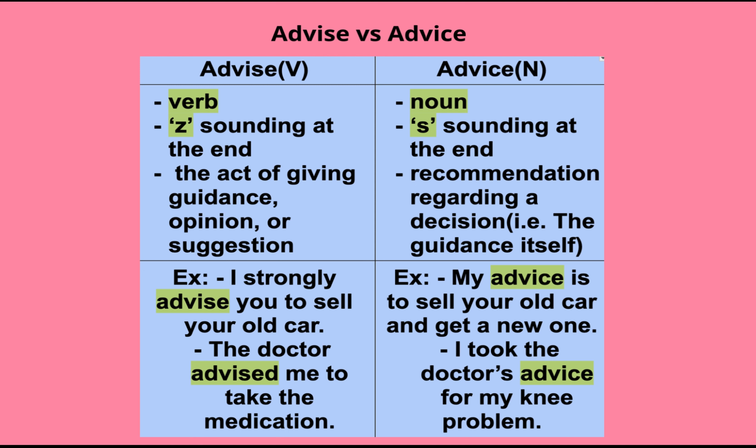The second one is advice. As we have talked, this is a noun, and it has an S sounding at the end. It is nothing but the recommendation regarding a decision — that is, the guidance itself. As it is a noun, we can use it only as one word: advice, A-D-V-I-C-E. Examples: 'My advice is to sell your old car and get a new one' — meaning he is giving his guidance or suggestion. 'I took the doctor's advice for my knee problem' — meaning you took the doctor's guidance to tackle your knee problem.